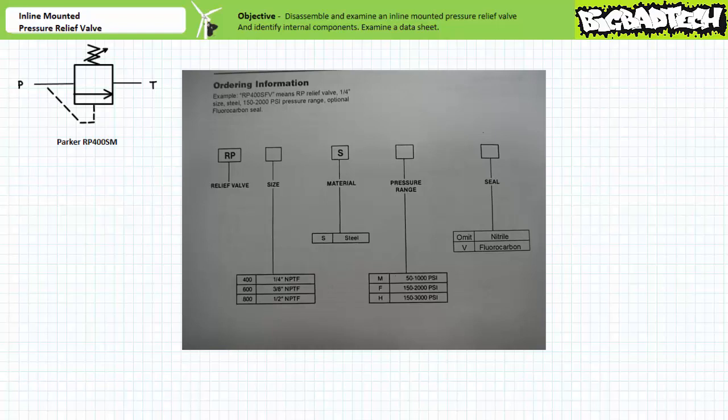RP means this is a pressure relief valve. The 400 size value means the valve has quarter inch NPFT threaded fittings. NPFT means national pipe taper fuel, a type of thread form designed to reduce leakage.